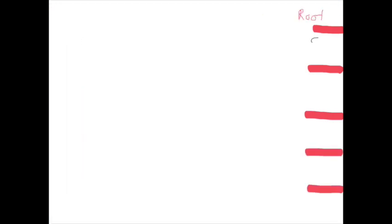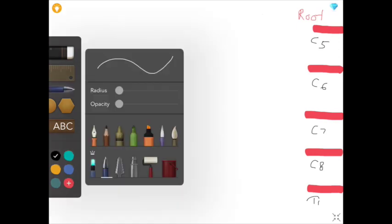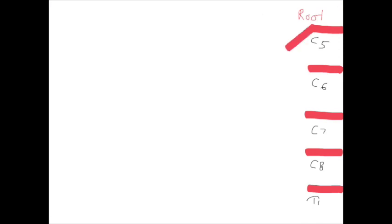Now I am drawing the roots of the brachial plexus: C5, C6, C7, C8, and T1. C means cervical and T means thoracic.